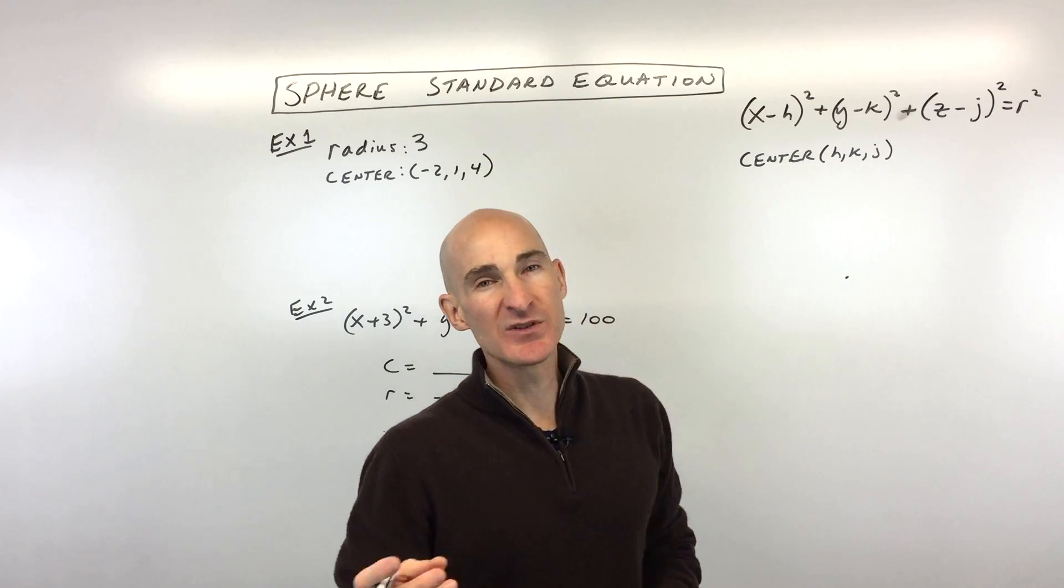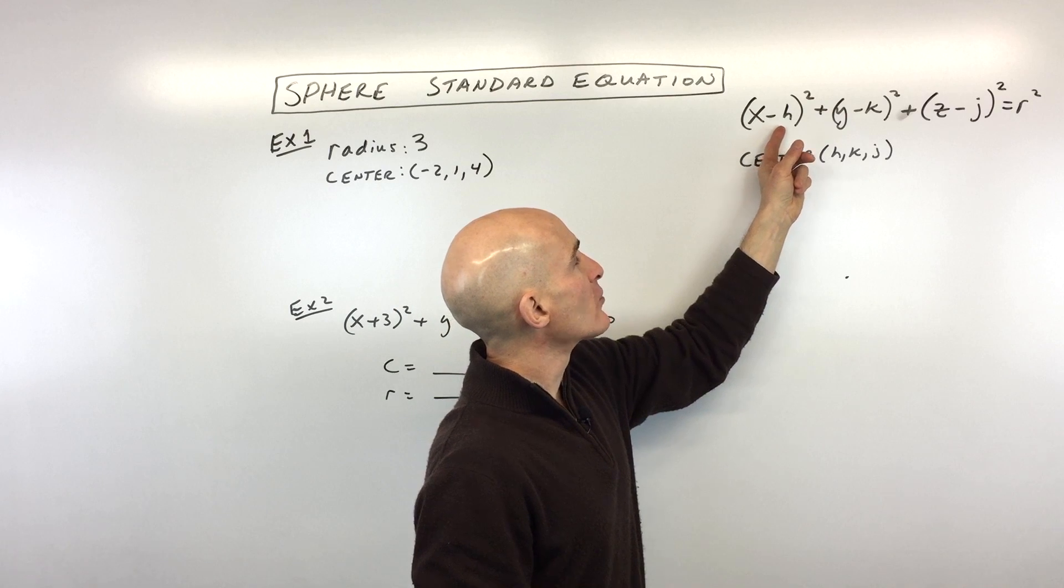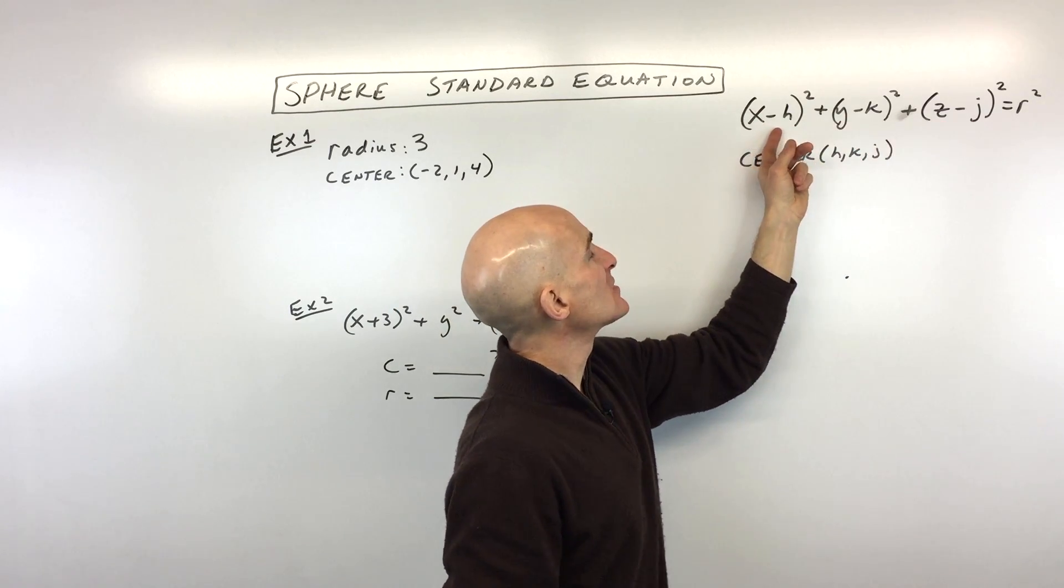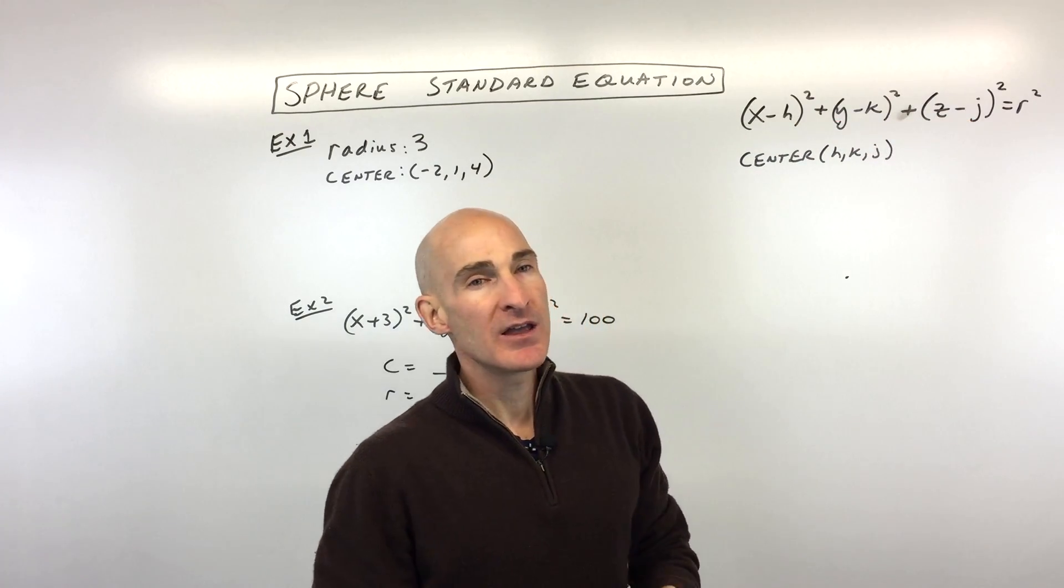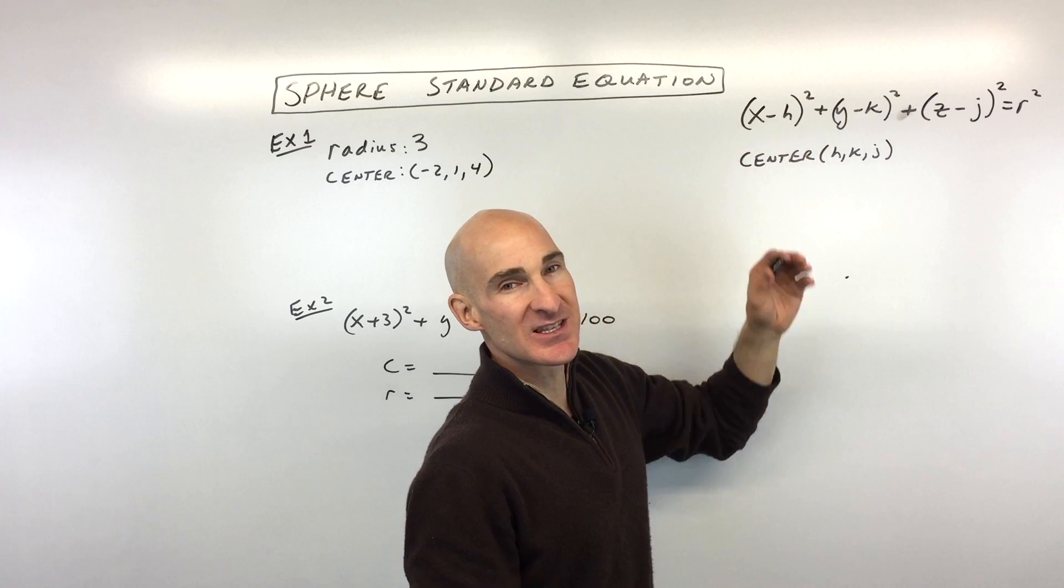Now, the thing that students sometimes make a mistake with is that when you're looking at this equation of a sphere, these quantities here in parentheses, the h, k, and j, the center of the sphere, they're going to actually have the opposite sign.